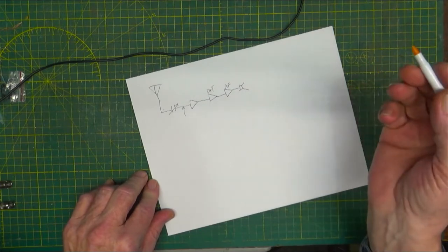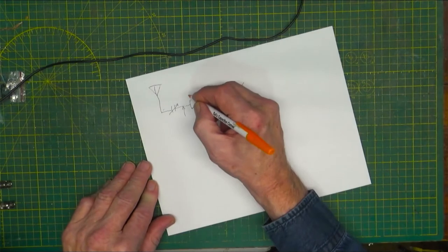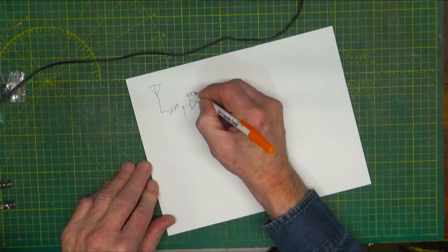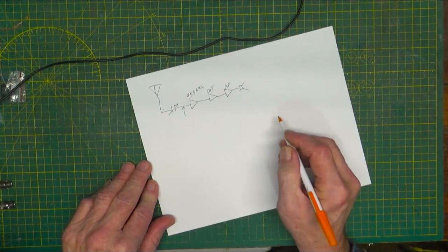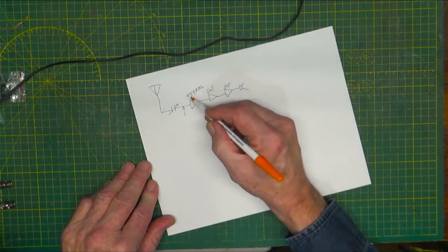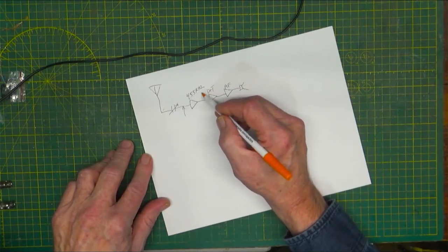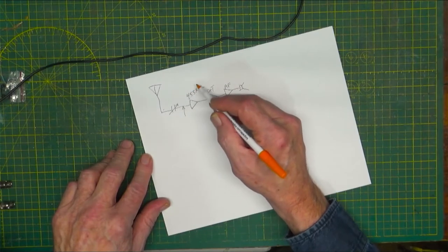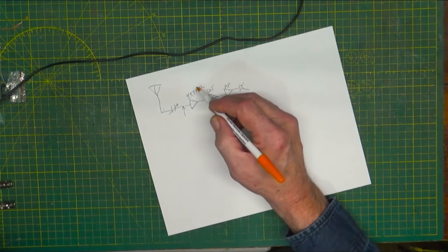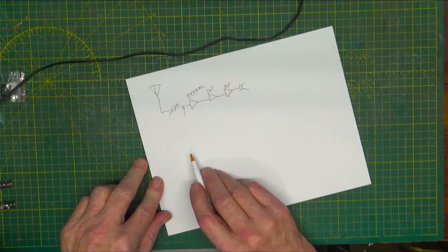By convention, and I don't know exactly whose convention, but they ended up with 455 kilohertz. Now that was at one time patented, so some radios will be 465. There's lots of them out there but the main standard is 455 kilohertz.